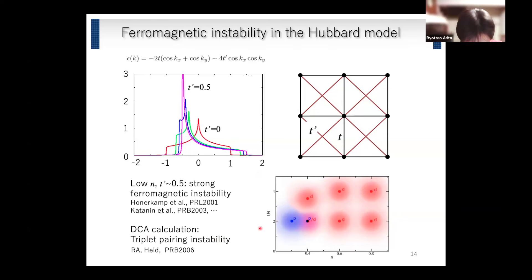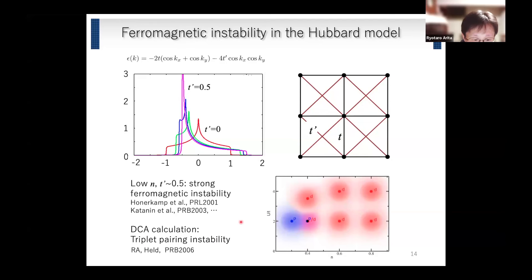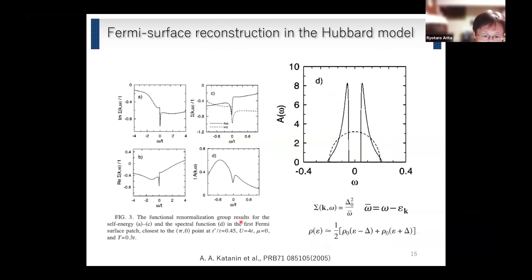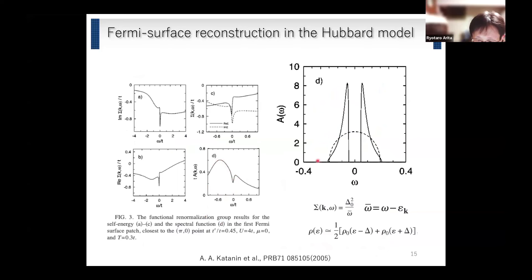Here we do not go into the possibility of superconductivity but just the normal state. For this system, when the density is low, the ferromagnetic instability becomes very strong. This is the spectral function by functional renormalization group. Andre discovered that when ferromagnetic fluctuation is strong, we have a pseudo-gap and a double-peak structure appears around the Fermi level.